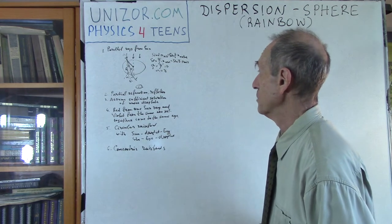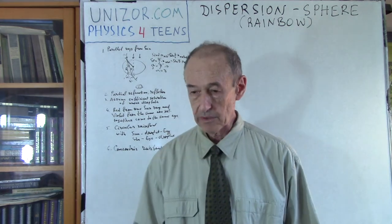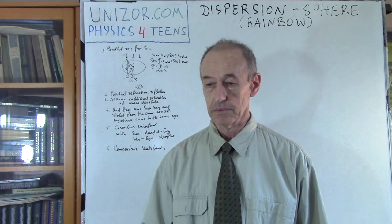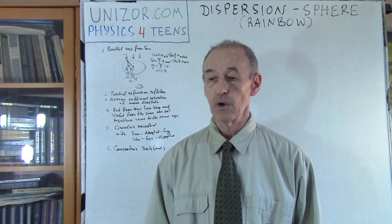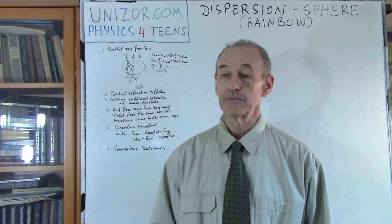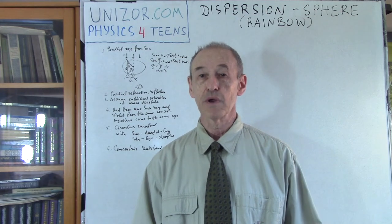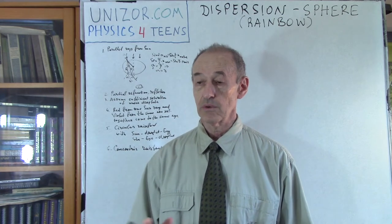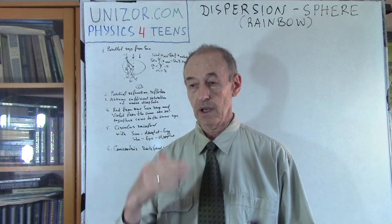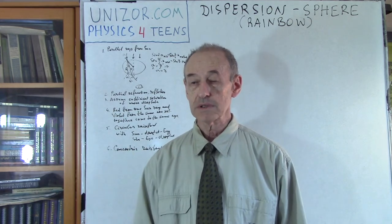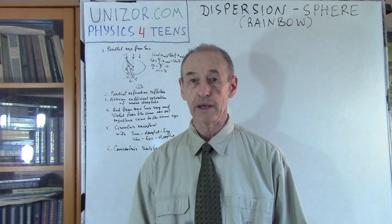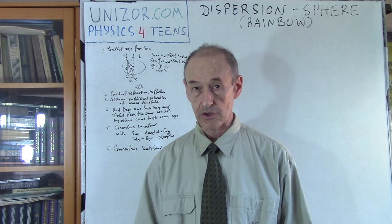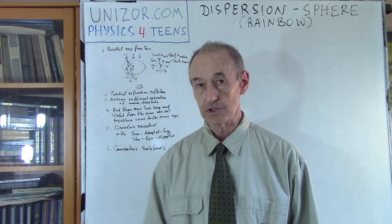Back to rainbows. Everybody knows what a rainbow is - everybody has probably seen it above waterfalls or after the rain. Just recently I saw a rainbow above Victoria Falls in Africa - very beautiful. Rainbows have this circular shape and different colors, and today we will talk about why that actually happens. The short answer is refraction, but now let's go into the details of this refraction.